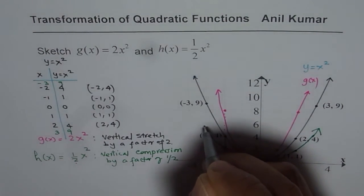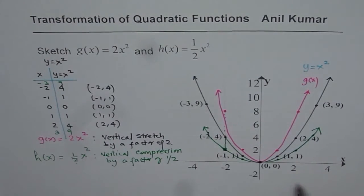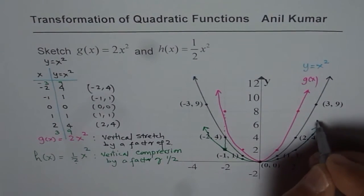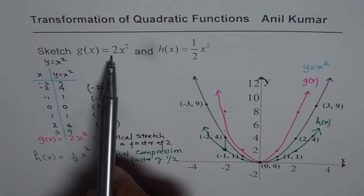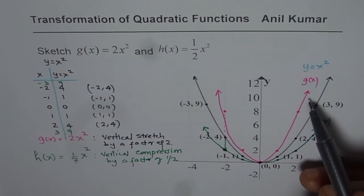That is how you could actually sketch your parabola. So that is the parabola for h of x which has been compressed vertically by a factor of half. As you can see, when we stretch vertically, the graph becomes narrower.